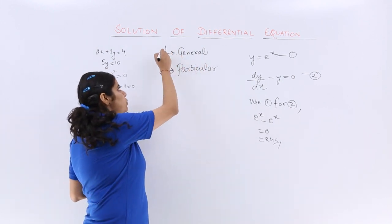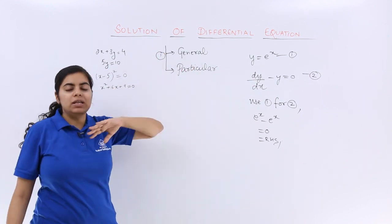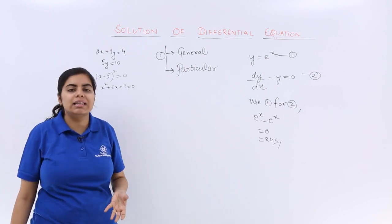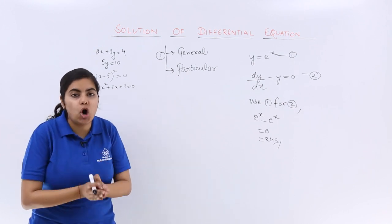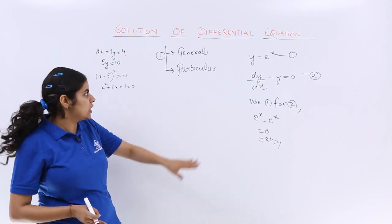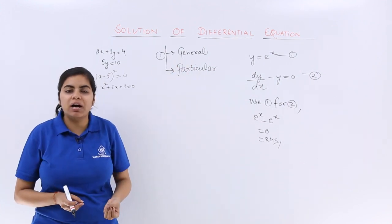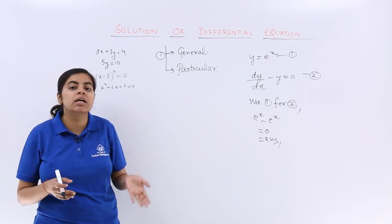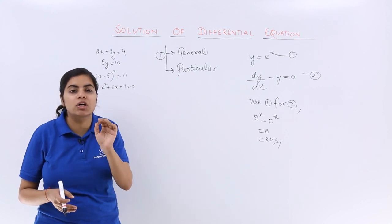As you know from the name, general solution means the type of solution in which the number of arbitrary constants are same as the order of the differential equation. I repeat, the number of arbitrary constants are equal to the order of the differential equation. There is no particular value assigned to the arbitrary constants.